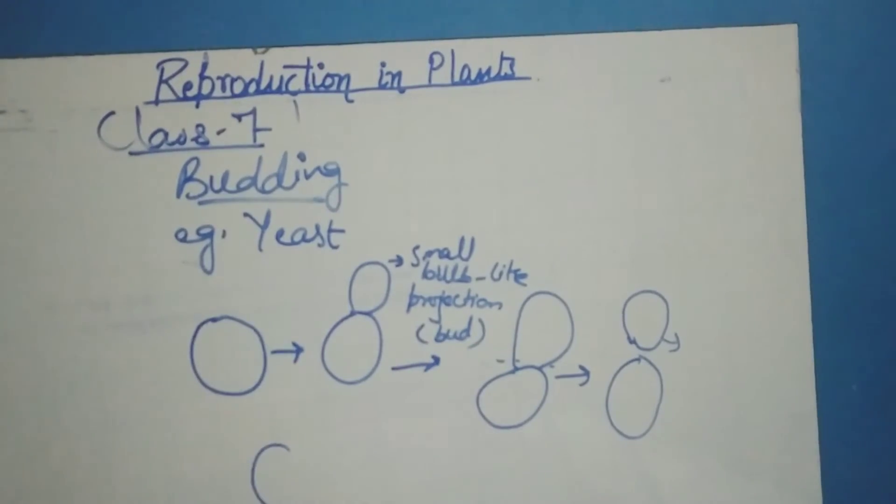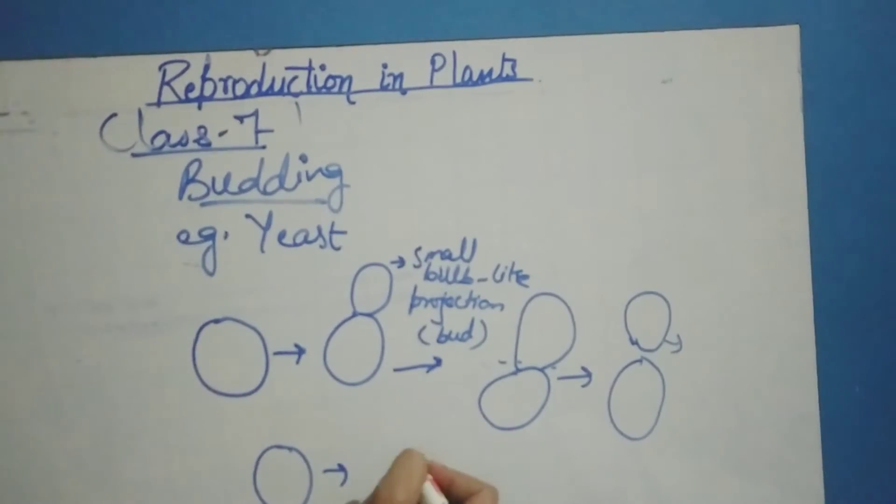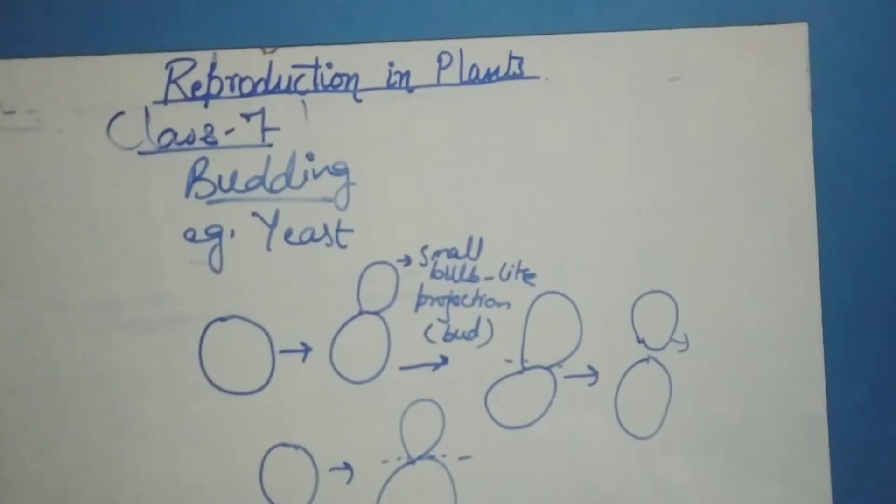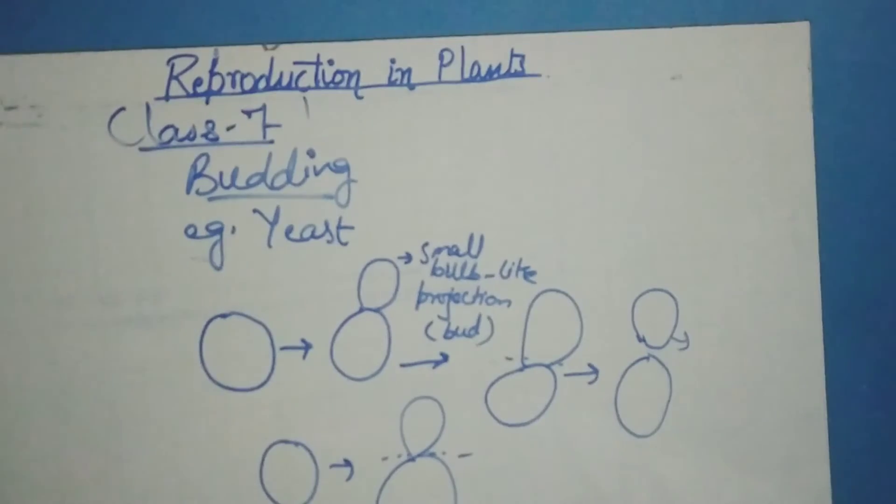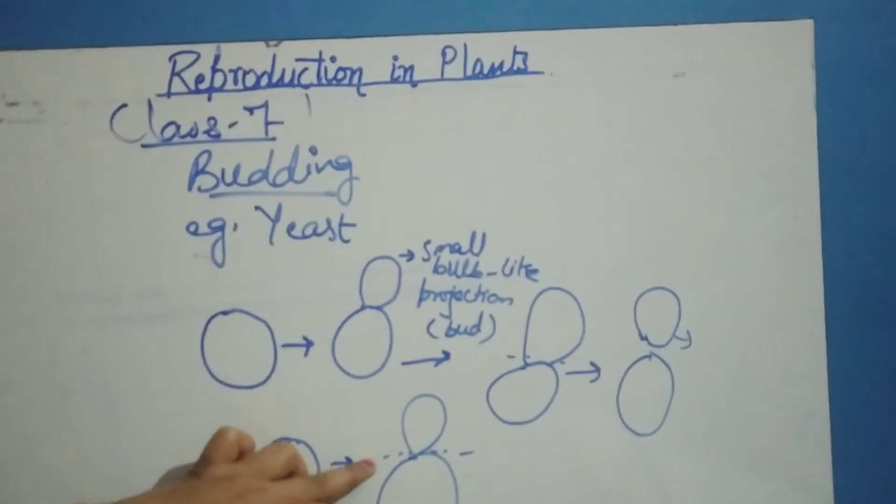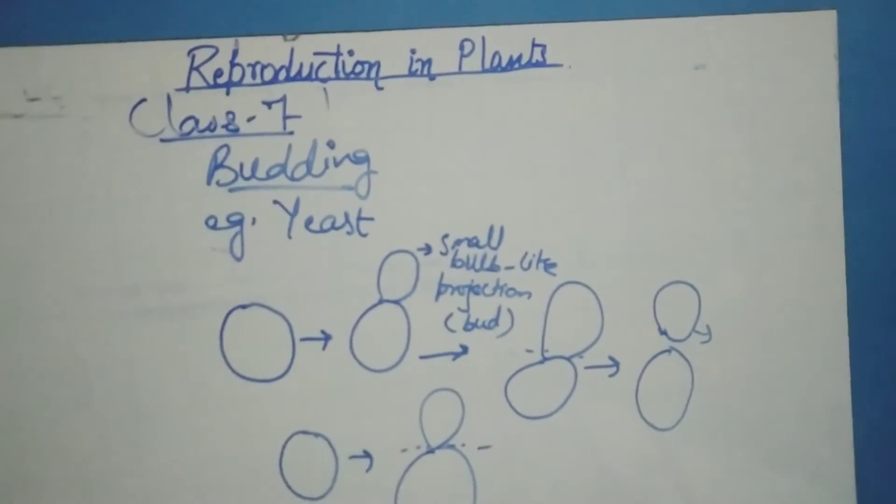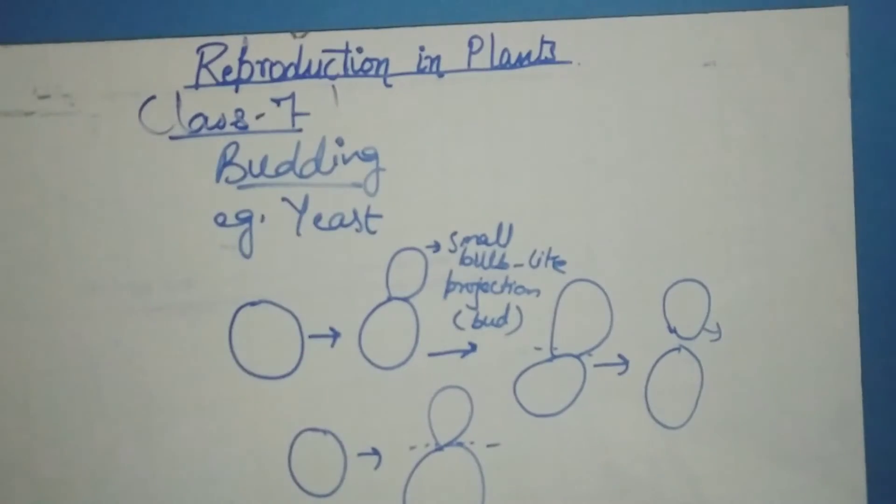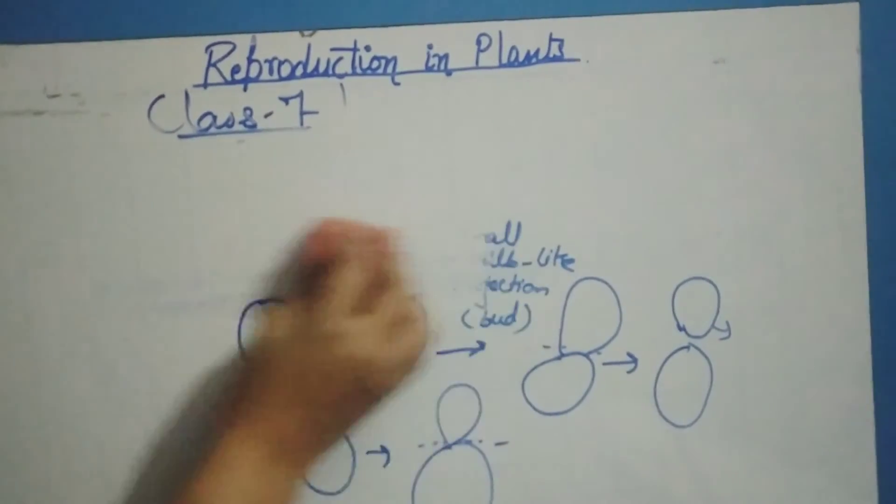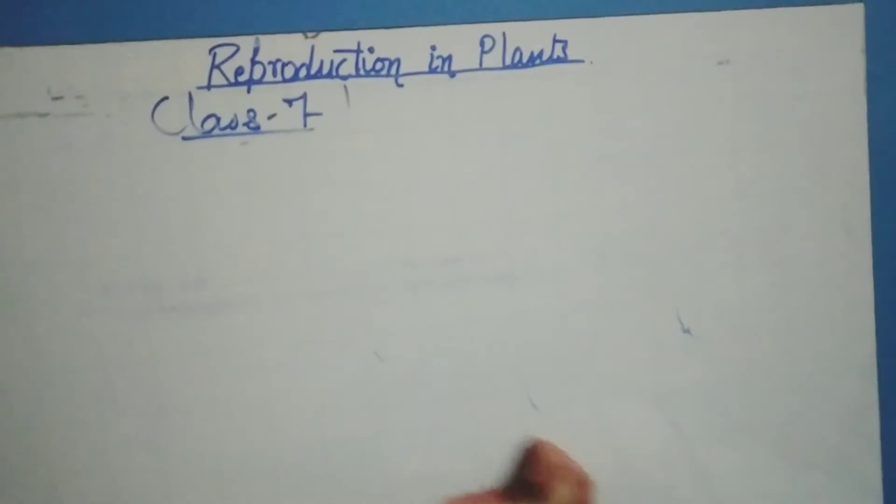This yeast cell will grow again and a new bud will form on it. The bud grows, matures, and separates from the parent cell, growing into a new individual or yeast cell. This is the process of budding. The bud takes a short period of time to form new individuals.